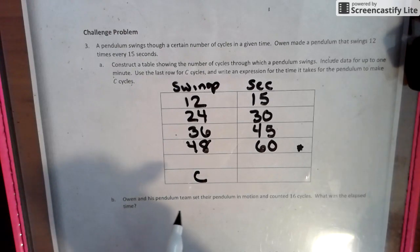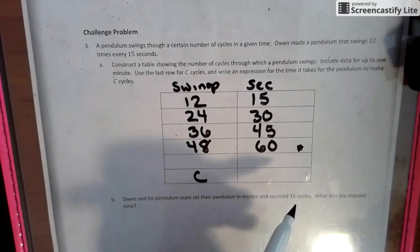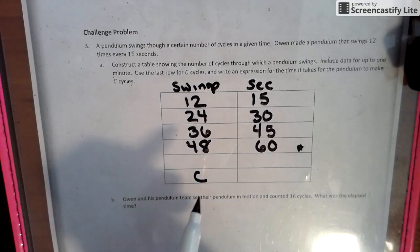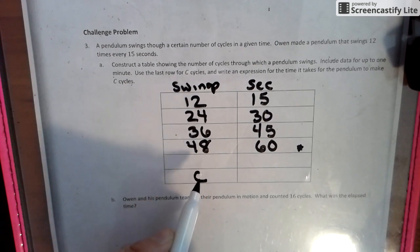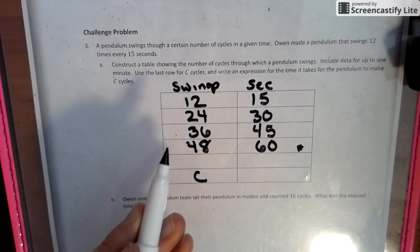then we can figure out Owen and his pendulum team set their pendulum in motion and counted 16 cycles. What is the last time? Well, 16 falls between here. And if we can find out how much each one is, then we can find out the 16.